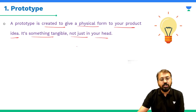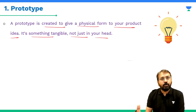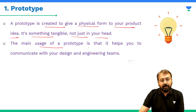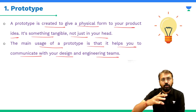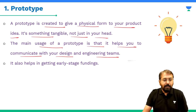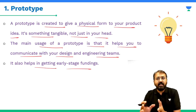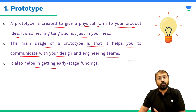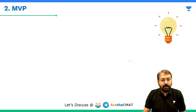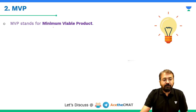So what is a prototype? A prototype is created to give a physical form to your product idea — it is something tangible, not just in your head. Once you have screened your idea, you create a prototype. The main usage of a prototype is that it helps you communicate with your design team and engineering teams. It also helps in getting early-stage funding. You may have seen this on Shark Tank — many times when someone presents an innovative product, they present the prototype, meaning they have created just one unit of that product to give investors an idea of how it looks and its utilities.